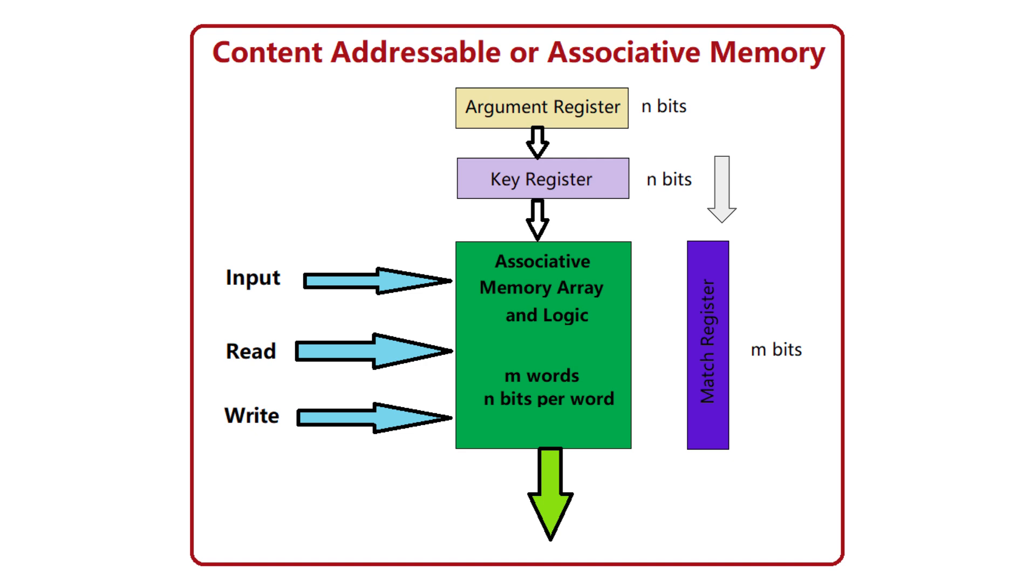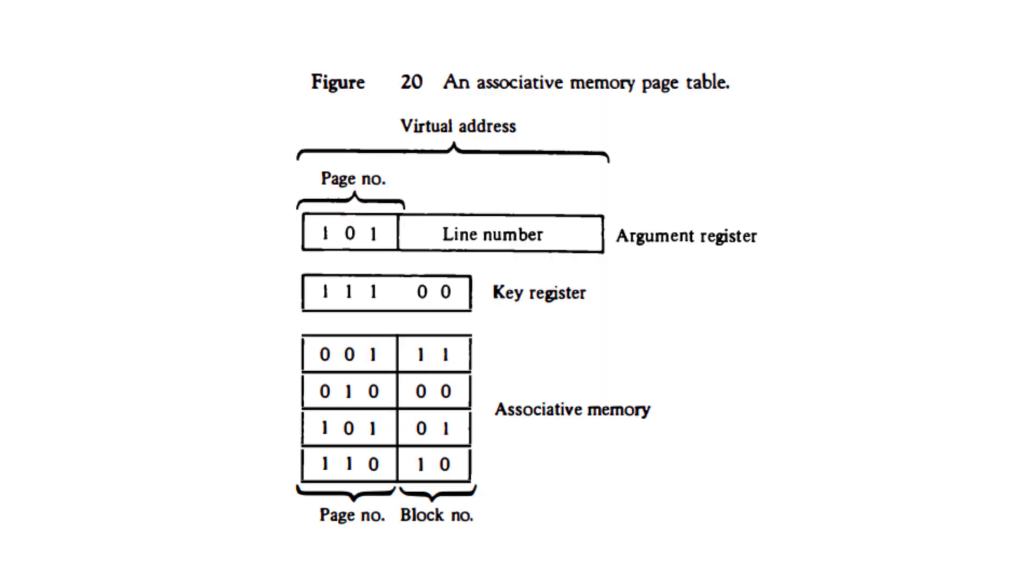Finally, the match register. This m-bit register stores the result of the match comparison for each word. If a word matches the search criteria, its corresponding bit in the match register is set to 1, otherwise it's set to 0.